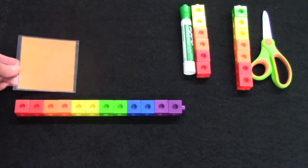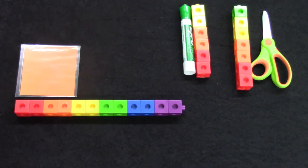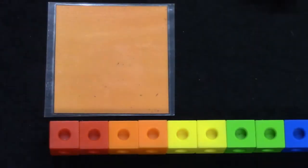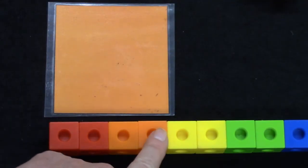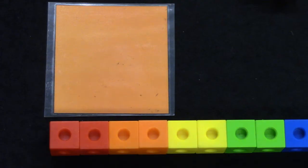Can we measure this square? How wide is the square? Let's take a closer look. The square is one, two, three, four cubes long.